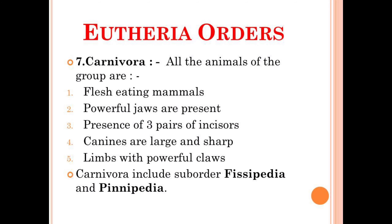Till the last video we have discussed about the 6 orders of the Eutheria. So let's continue with the 7th one. The 7th order is the Carnivora, and the characteristics of those animals are basically they are flesh-eating mammals having powerful jaws, presence of 3 pairs of incisors, canines are large and sharp, and limbs have powerful claws.